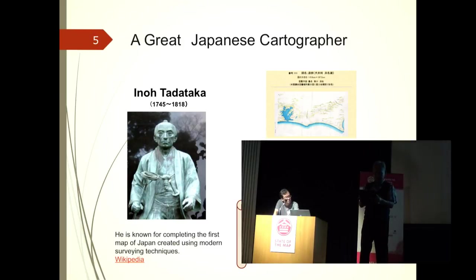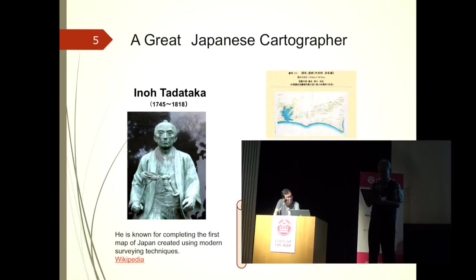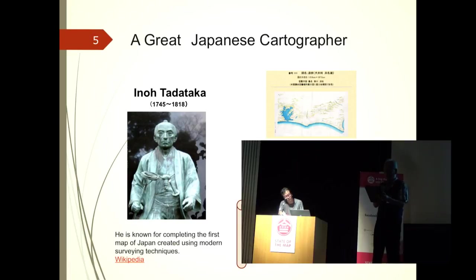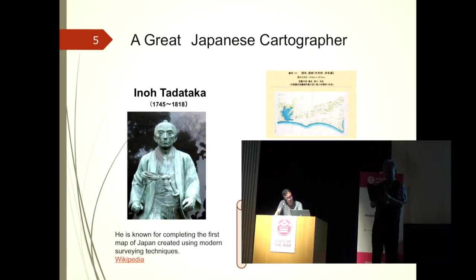Ino Tadataka — you may know him. He is a historic great man who completed the first map of Japan 200 years ago. He began studying geography in his 50s. He is a pioneer of the senior generation's way of living — lifelong learning and continuous effort. 'Let's try something anyway. Let's do it.' His spirit was the motivation to start our activity.